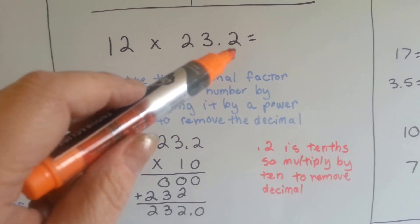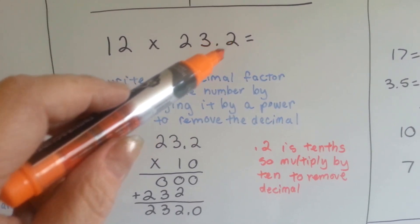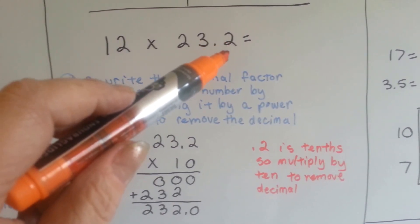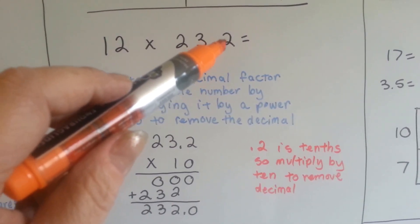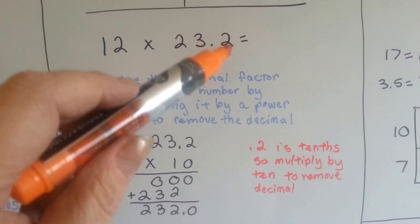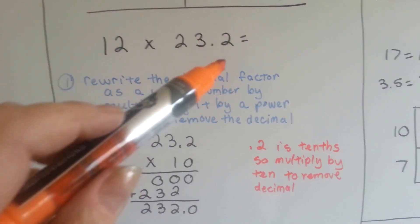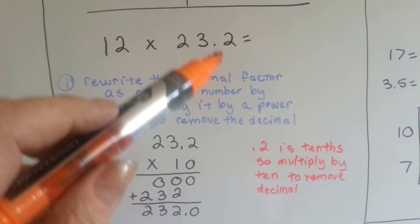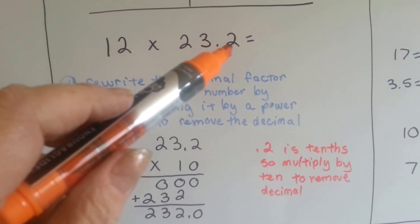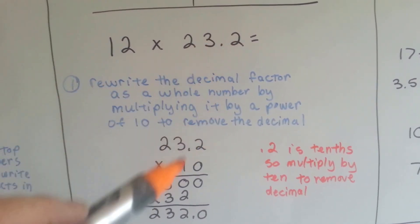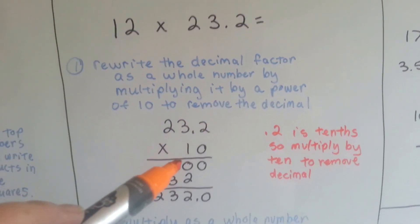If it were hundredths, we would multiply it by a hundred. If this was a thousandths decimal, we would multiply it by a thousand. So because it's tenths, we're going to multiply it by 10.